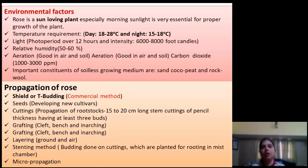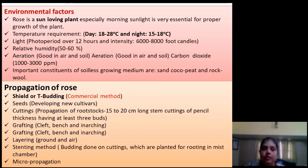Propagation of Rose: Rose is commercially propagated by tea budding, also called shelled budding. Under tea budding, a T-shaped incision is given on the rootstock and the bud of the desired scion is inserted into that T-shaped rootstock. It is being commercially practiced all over the world. By the seed method, it is only used to develop new cultivars. Cutting is mainly used to propagate the rootstock, and other methods like grafting, layering, stenting, and micropropagation can also be used.